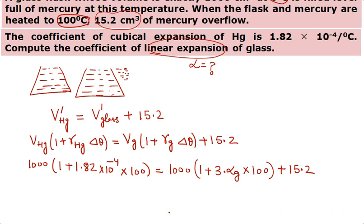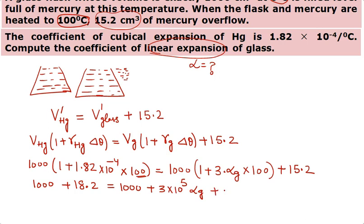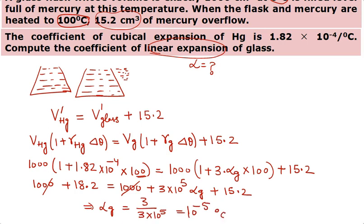After substitution, the calculations give: the 1000 terms on both sides simplify, 15.2 shifts across, and gamma_glass comes out as 3/(3×10⁵), which is 10⁻⁵ per degree Celsius. That is the required answer. Please note it down.